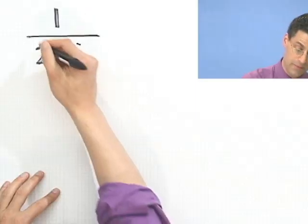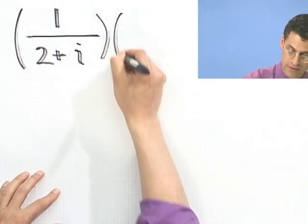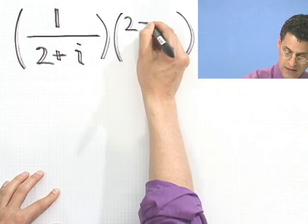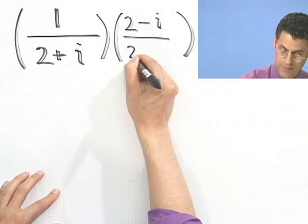The key is to multiply top and bottom by the conjugate of the denominator. Won't change the value, but it'll allow us to figure out what that number is.